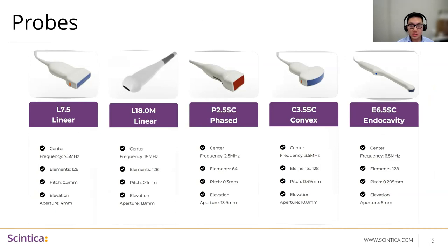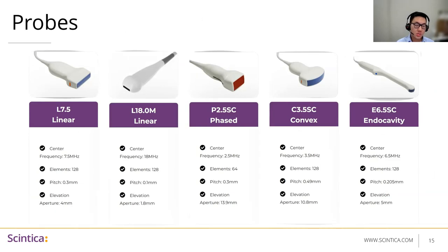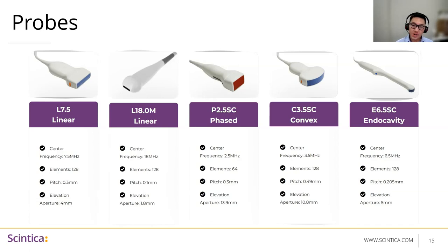Standard probe options available for purchase work right out of the box with matching pinout. These include two linear array options, a phased array, a convex, and a metal cavity probe. They range from 64 to 128 elements with frequencies from 2.5 megahertz up to 18 megahertz, and the maximum transmit frequency for the system is 30 megahertz. If you already have your own transducer, as long as you provide the pinout, an adapter board can be made and it would work seamlessly together.